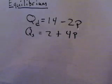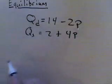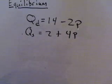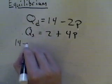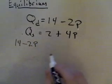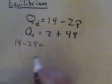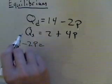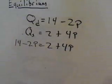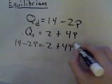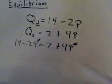So if you remember from the graph, we just want to find where our quantity demanded is equal to our quantity supplied. So using some basic algebra, my quantity demanded is 14 minus 2 times my price. I want to set that equal to my quantity supplied, which is the same thing as 2 plus 4 times the price. So now I've got an equation where I can solve for what my equilibrium price is going to be. So when I solve this, this is going to give me my P star.